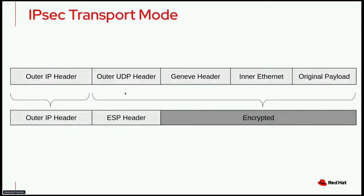IPSec works in two different modes: transport mode and tunnel mode. In tunnel mode, your entire IP packet is encapsulated in an IPSec tunnel, and the outer IP header is fully encrypted. However, in this work we're using IPSec in transport mode. In transport mode, the outer IP header remains the same, but all the content within that outer IP header gets encrypted in an ESP packet.